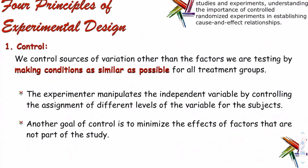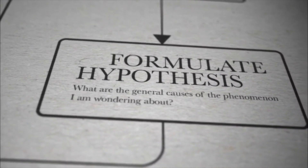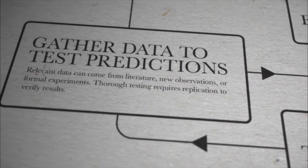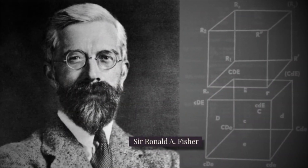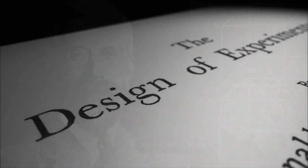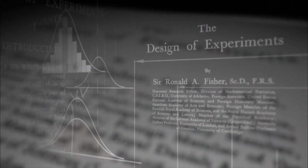Before we jump into experimental design — the crux of this chapter — I want to go back to the PBS documentary to show where experiments came from. The scientific method demands a hypothesis which leads to a prediction of results from a carefully designed experiment. It wasn't until the 1920s and 30s that British scientist Ronald A. Fisher laid out guidelines for designing experiments, using statistics and probability as a way of judging results.